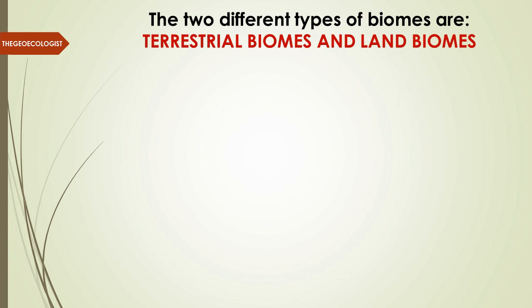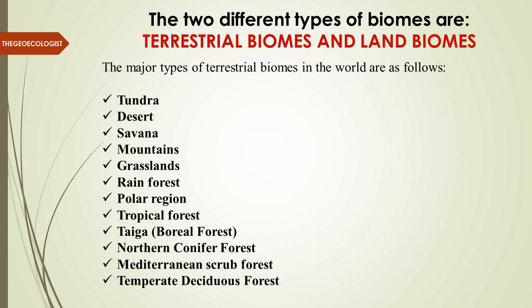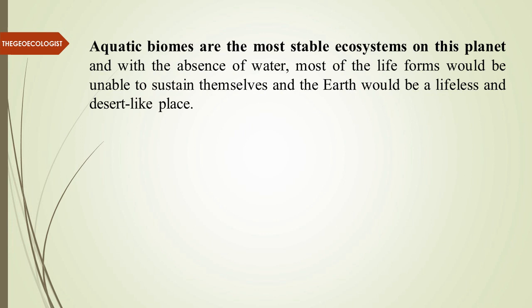The two broad categories of biomes are terrestrial — land-based — and aquatic. The major types of terrestrial biomes are: tundra, desert, savannah, mountains, grasslands, rainforest, polar region, tropical forest, taiga boreal forest, northern conifer forest, Mediterranean scrub forest, and temperate deciduous forest. These are the many types of terrestrial biomes that exist on land.